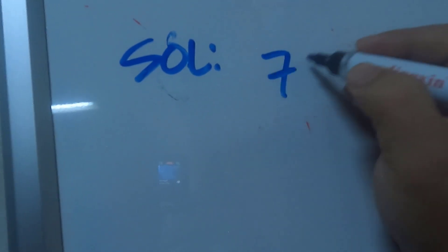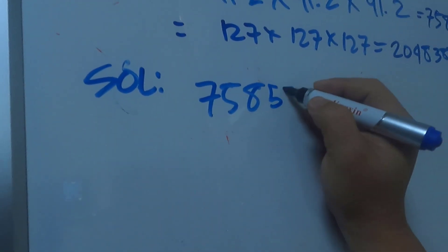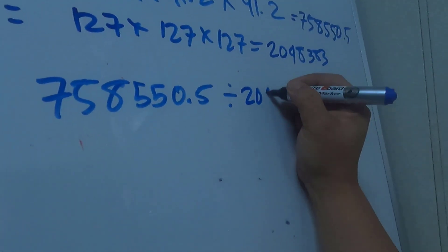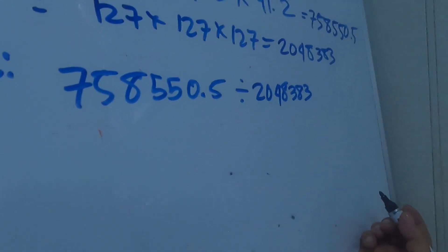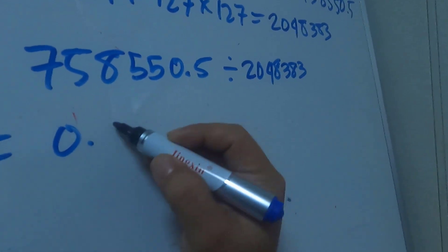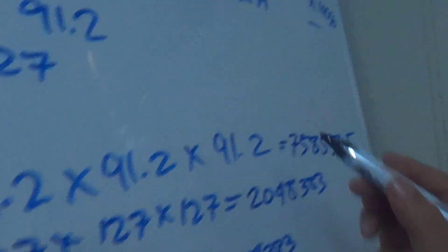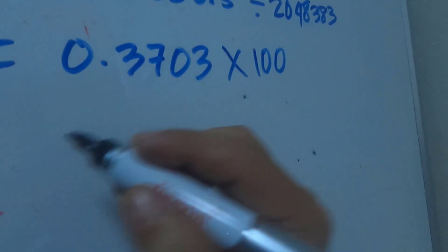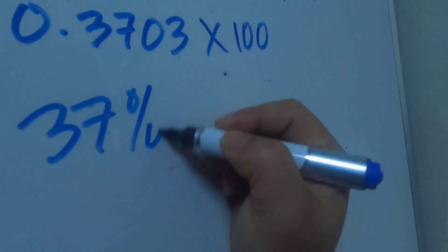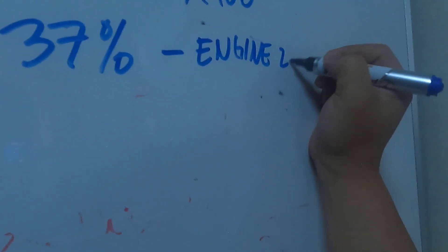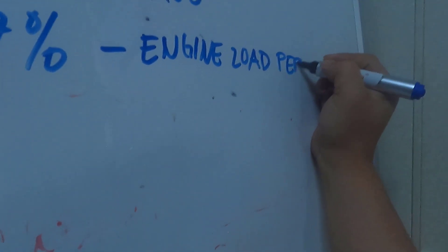So ngayon, i-divide mo yung 758,550.528 divided by 2,048,383. Meron siyang answer na 0.3703, then times mo sa 100. So yung engine load mo is 37 percent — ito yung engine load percentage.